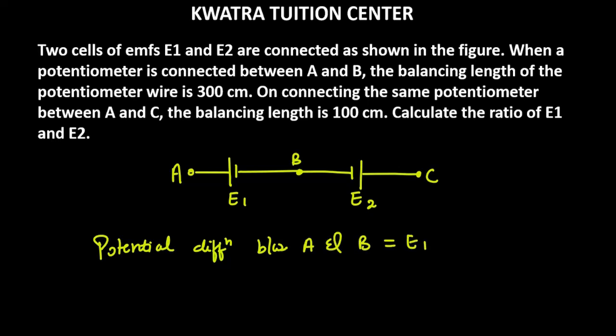Then you can see we have potential difference between A and C. On connecting the same potentiometer between A and C, the balancing length is 100 centimeters.